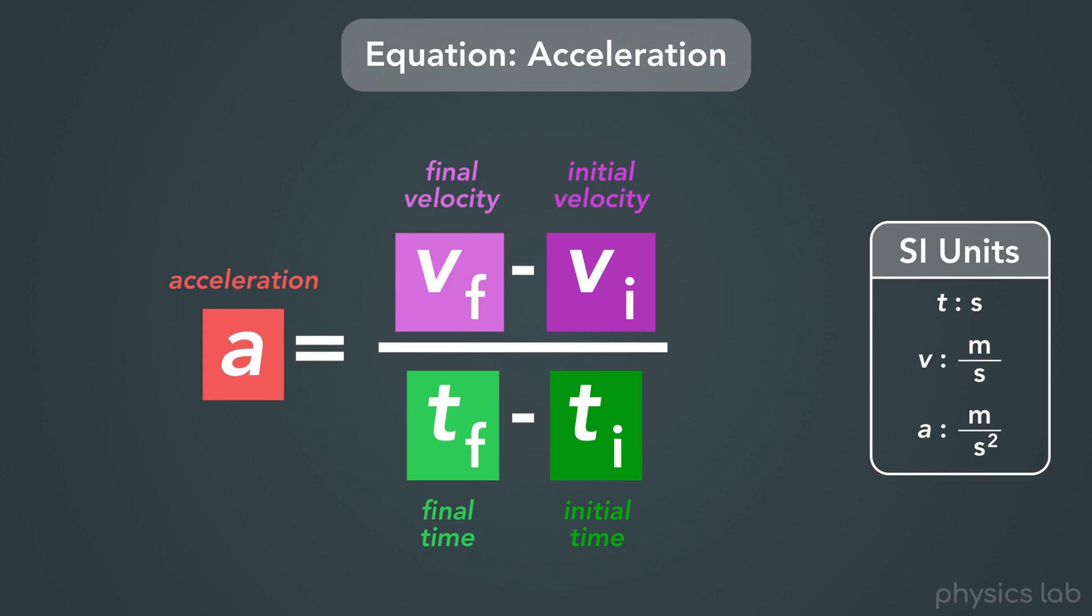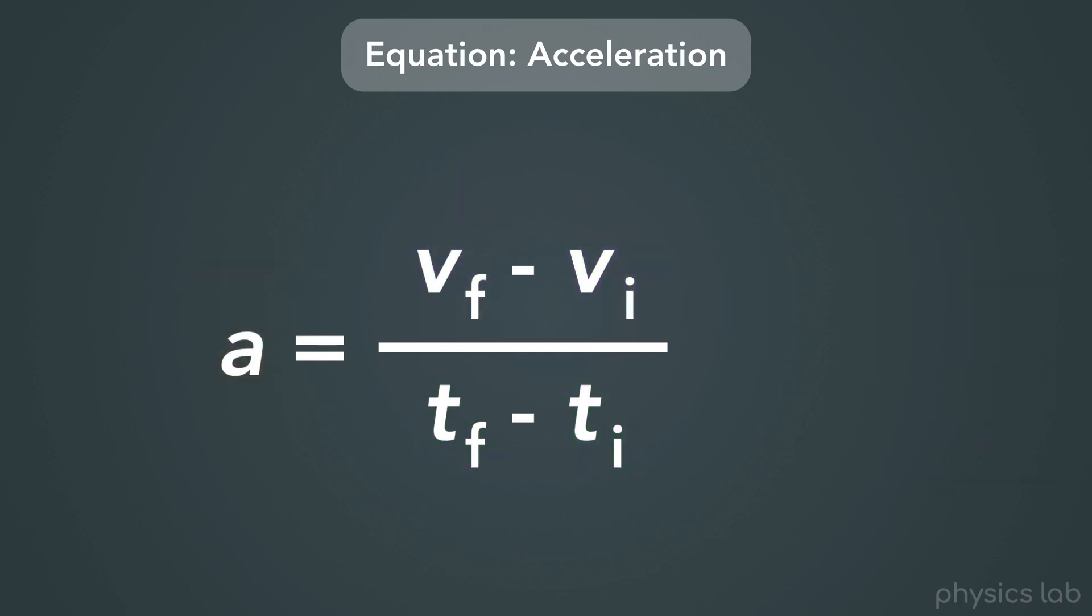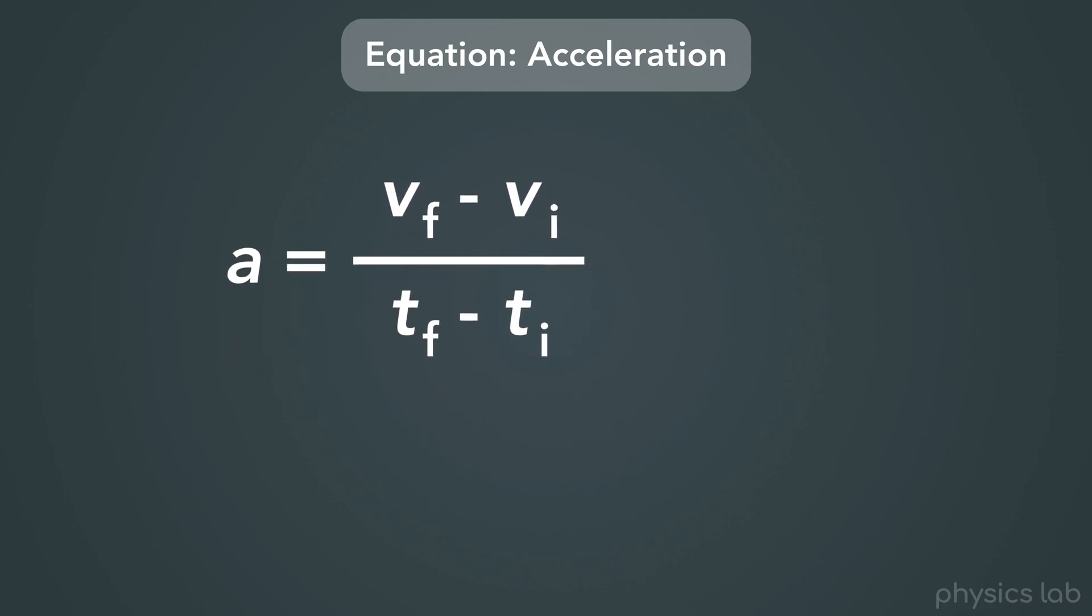Also, although it's not super important, I do want to mention that just like our equation for average velocity, this here is really the equation for average acceleration. But we won't be dealing with changing accelerations in this course, so the acceleration at any time will always be the same as the average acceleration. And like before, you might see this equation written a different way, like this. These two are the exact same equation, but with the variables rearranged in different ways.